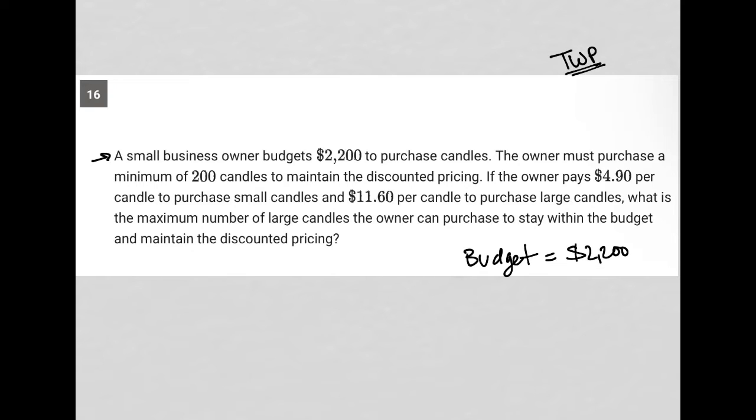The owner must purchase a minimum of 200 candles to maintain the discounted pricing. So it has to buy greater than or equal to 200 candles. That's a P for purchase.